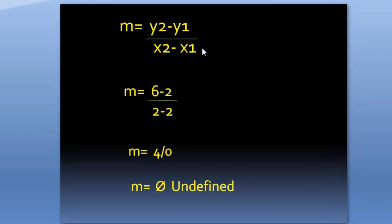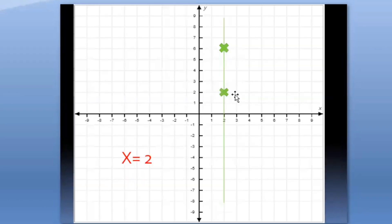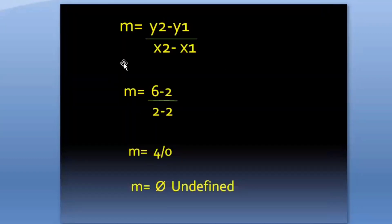Here I have the formula of slope: change in y axis over change in x axis. Our first coordinate pair is (2, 2) and the second one is (2, 6). When I plug in, I get 4 for the change in y value and 0 for the change in x value. In mathematics, we cannot divide any value by 0, so our slope is undefined.